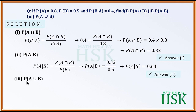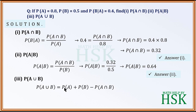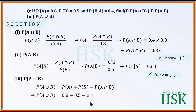In the third part, we calculate probability of A union B using the result: probability of A union B equals probability of A plus probability of B minus probability of A intersection B. So 0.8 plus 0.5 minus 0.32, which simplifies to 0.98, the required answer.